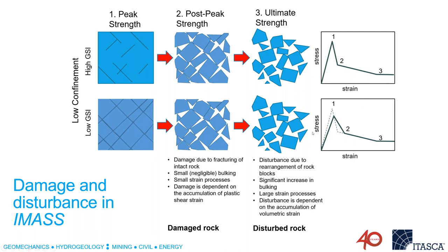Now let's look at the stress-strain behavior of these two different rock masses. If we only had two strength envelopes — one for peak and one for residual strength — we would capture the peak and ultimate strength correctly but miss what's happening in the middle at the post-peak strength. That's a very critical part of rock mass behavior because mechanisms like cohesion weakening and frictional strengthening occur at that point. If you set your residual strength to capture that physics, you would miss the frictional degradation as we move from post-peak to ultimate strength — the true residual state.